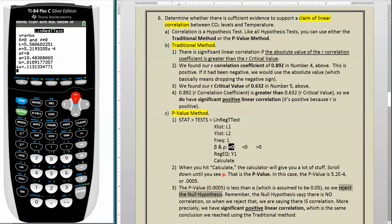Remember, the null hypothesis says there is no correlation, so when we reject that, we are saying there is correlation. More precisely, we have significant positive linear correlation, which is the same conclusion we reached using the traditional method.